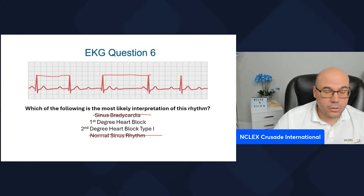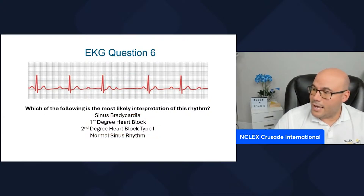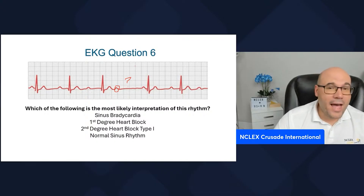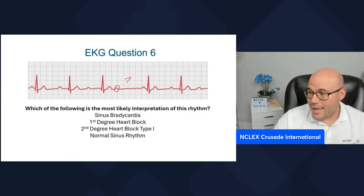If we look, we can see that there is a P wave here and a missing QRS. If I have missing QRS complexes, it cannot be first degree heart block.